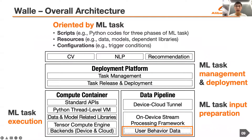Let's overview the whole architecture of Wally. Wally is oriented by machine learning tasks, which comprise scripts, resources, and configurations. Wally consists of a development platform, a data pipeline, and a compute container catering to machine learning task management and deployment, input preparation, and task execution, respectively.